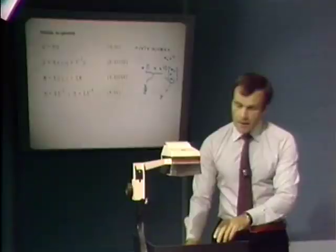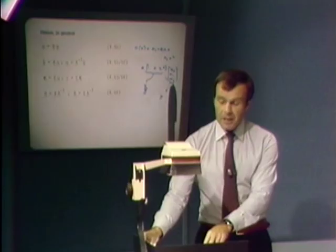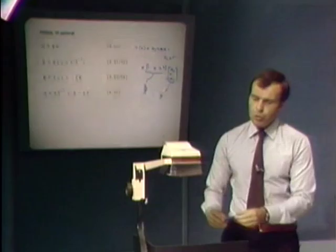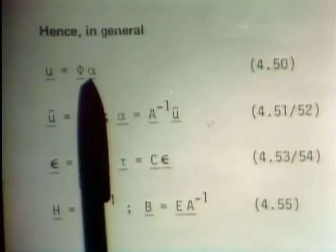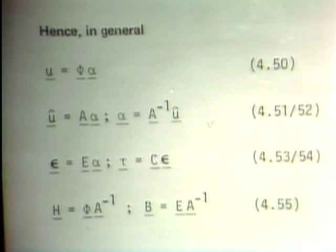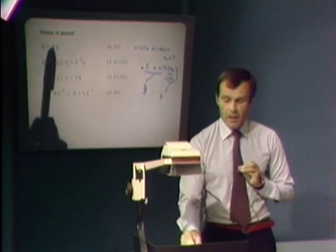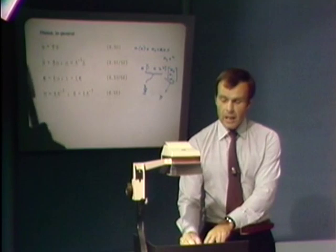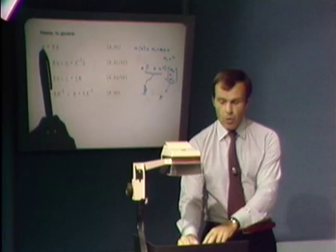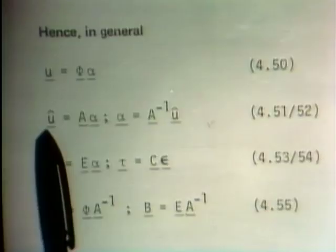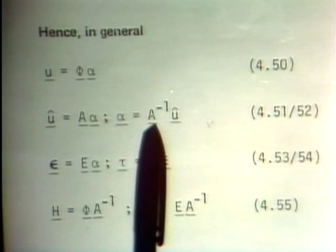To evaluate the alpha values, we apply the displacement relationship at the element nodal points. Substituting the actual nodal point coordinates into the phi matrix and setting the left-hand side equal to the nodal point displacements, we directly generate the relation u_hat = A * alpha. We can then invert this to obtain alpha = A^{-1} * u_hat — the generalized coordinates in terms of the nodal point displacements.